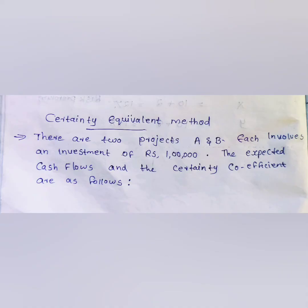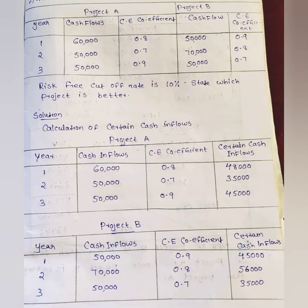Problem: There are two projects, A and B. Each involves an investment of Rs. 1 lakh. The expected cash flows and certainty coefficients are given for three years. Project A has cash flows of Rs. 60,000, Rs. 50,000, and Rs. 50,000, with certainty coefficients of 0.8, 0.7, and 0.9. Project B has cash flows of Rs. 50,000, Rs. 70,000, and Rs. 50,000, with certainty coefficients of 0.9, 0.8, and 0.7.